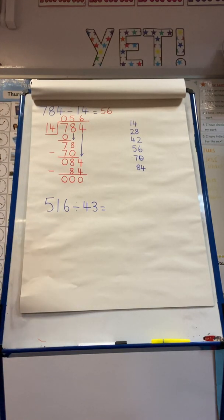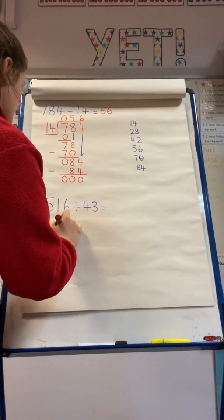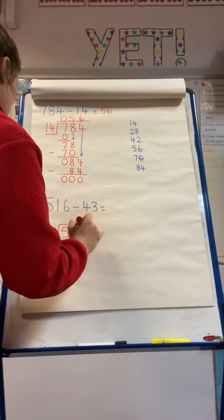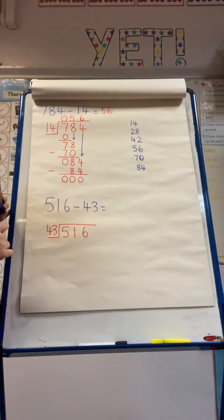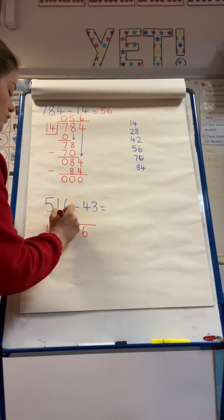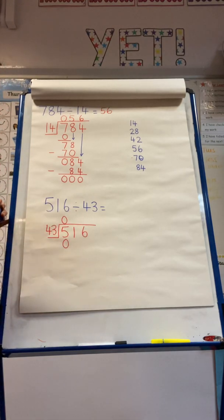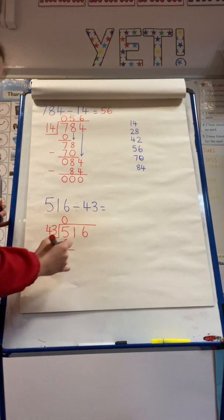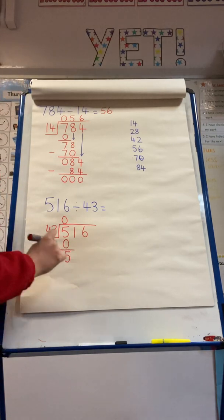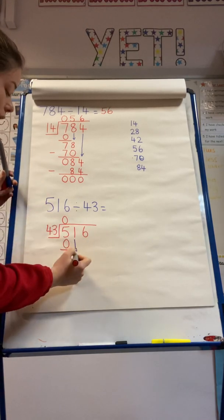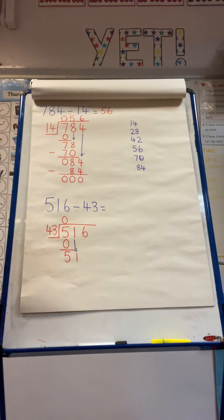I'm going to have another go, looking at 516 divided by 43. I'm going to set out my calculation just like the bus stop method. I've got a total of 516 and I'm dividing by 43. I know that I can't get any groups of 43 into 5 because 43 is greater than 5, so I'm going to subtract nothing and put a 0 above my 5. 5 subtract 0 leaves me with 5. I now need to bring my 1 from the 10s column down to join my 5, so I'm looking at the number 51.